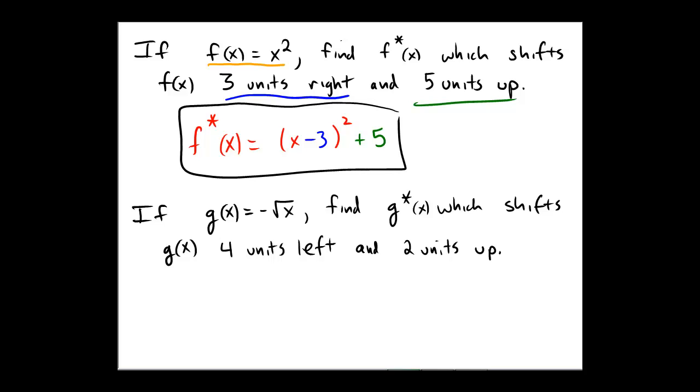Second problem, the parent function would be g of x is the negative square root of x. And we are going to perform a translation horizontally of 4 left and vertically of 2 up.